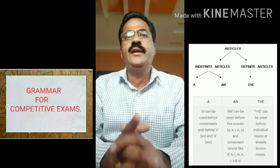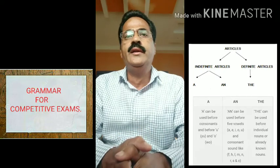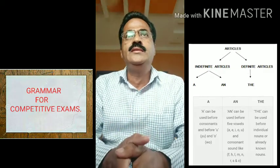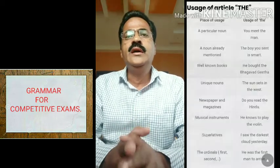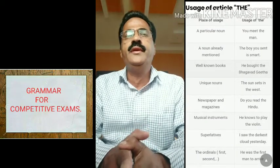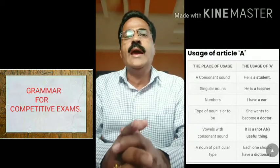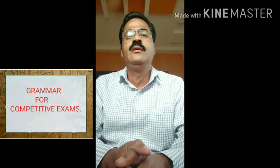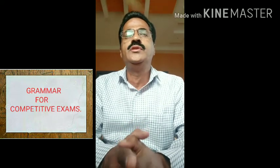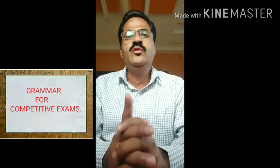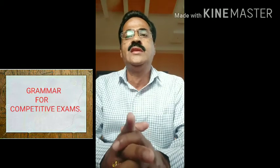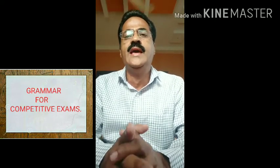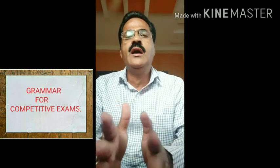English has two articles that we call the definite article and the indefinite article. The definite article is 'the' and the indefinite article is 'a' or 'an'. 'The' is used to refer to specific or particular nouns. 'A' or 'an' is used to modify non-specific or non-particular nouns. The rule for indefinite article usage is: use 'a' before nouns or adjectives that start with a consonant sound, and use 'an' before nouns or adjectives that start with a vowel sound.